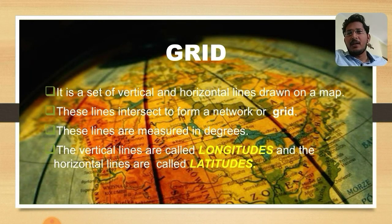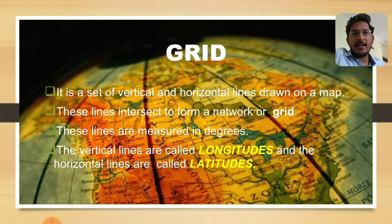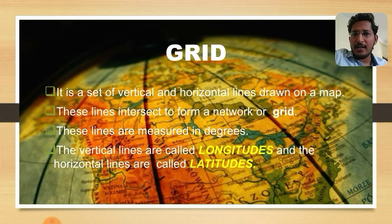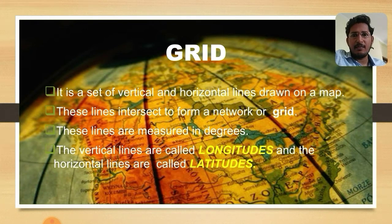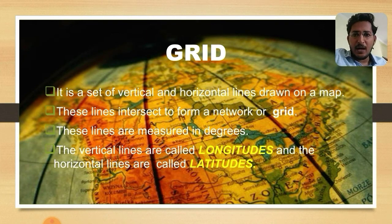Here we conclude our session. We have discussed scale — verbal scale, linear scale, and representative fraction — as well as direction, title, legend, and grid. These are the essential features of a map. These should be present when you draw a map, and when you examine a map, please check for these features. If you have doubts, add them in the comment box. We will meet in the next session on geographical features and wind up the chapter.